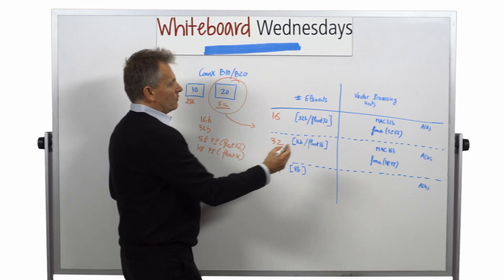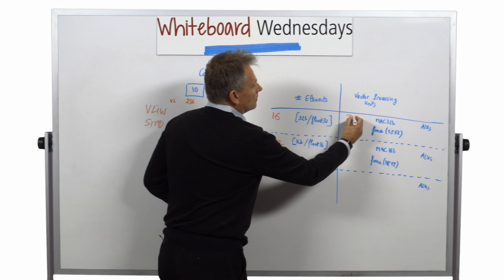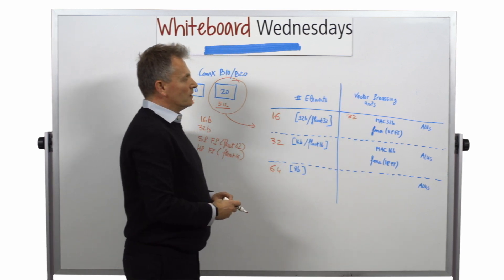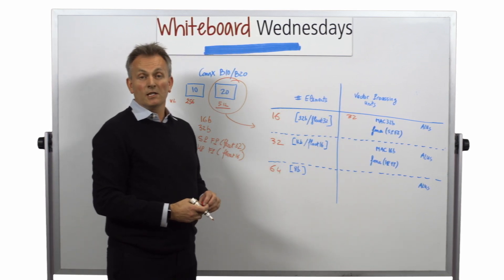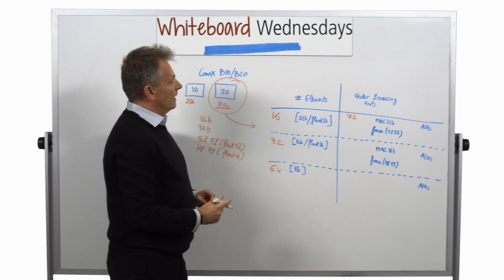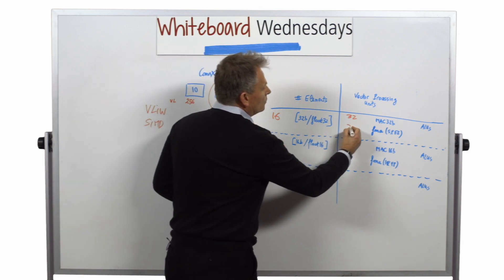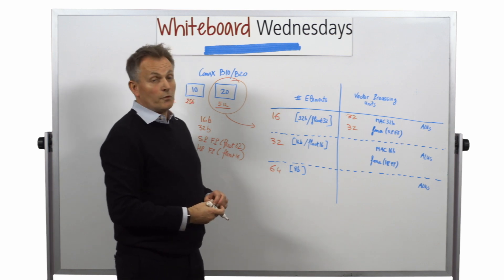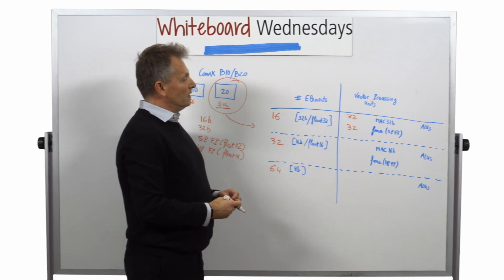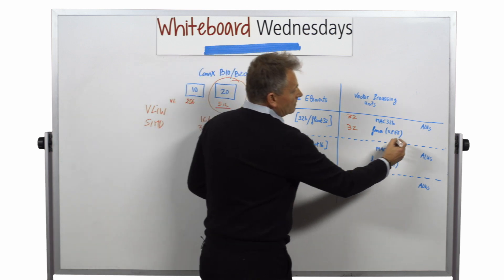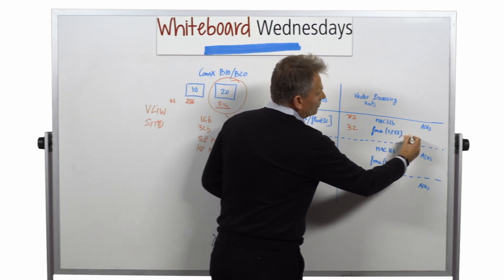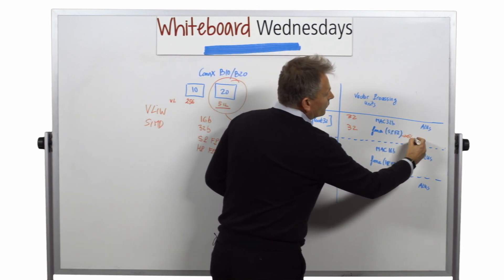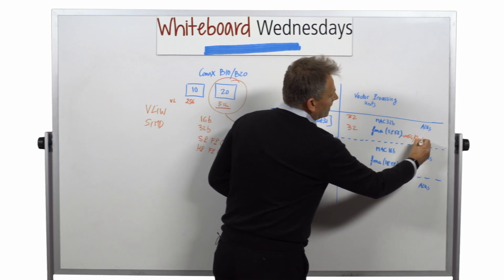So in the case of the 32-bit processing, we have actually 32 MAC 32-bit that can be executed per cycle. And we have also 32 floating point FMAs, so fused multiply add, that could be executed per cycle, which means that is actually equivalent to 64 floating point operations per cycle.